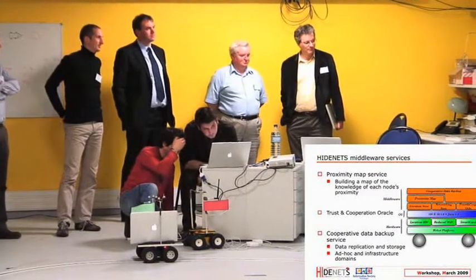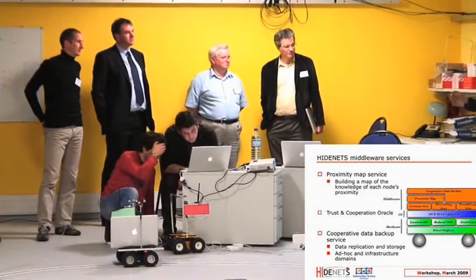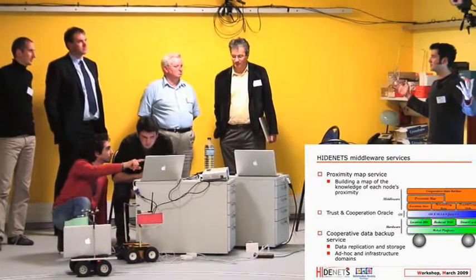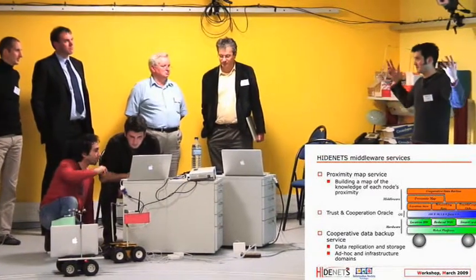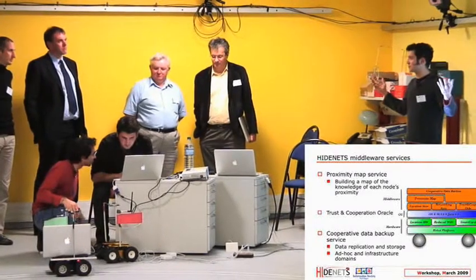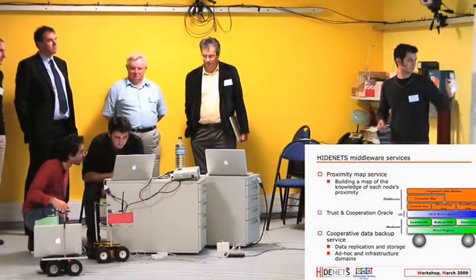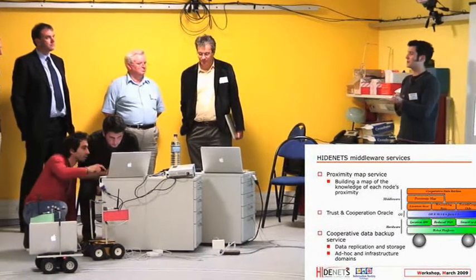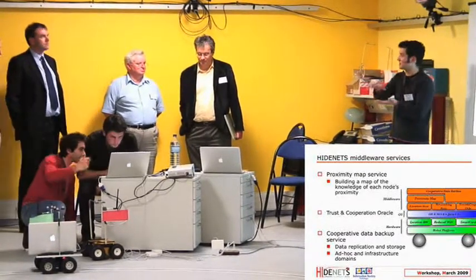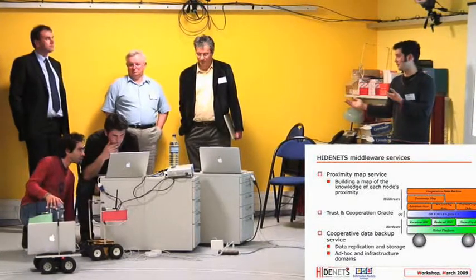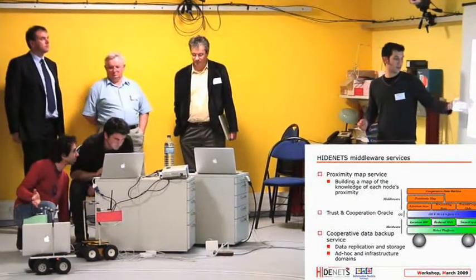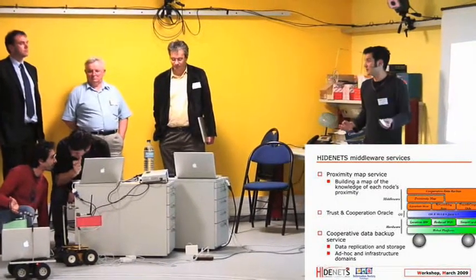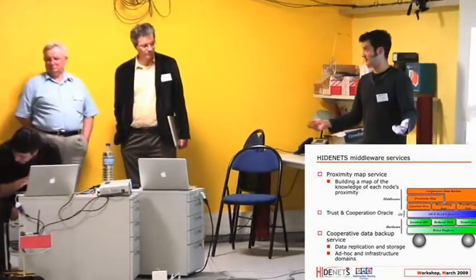On top of that, we have some parts of the HydeNets middleware: namely, the proximity map service, which is used to collect information about neighboring cars, their position, and their available resources for storage; the trust and cooperation oracle, to choose whether or not we are going to trust a given car to store our data; and the cooperative data backup service, which implements the actual data backup.